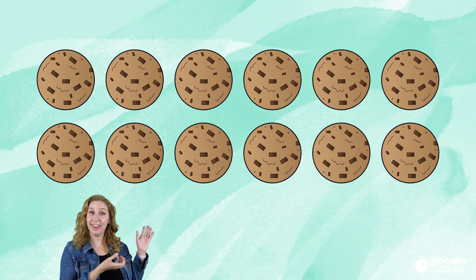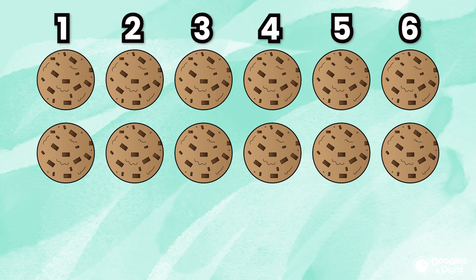Alright, let's try another one. How about this? Alright, we're going to start counting the columns again. There are 6 columns of cookies.